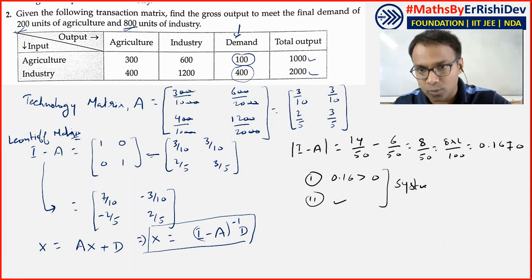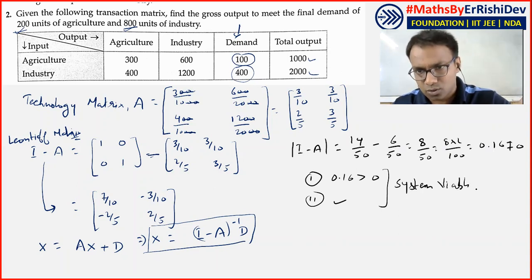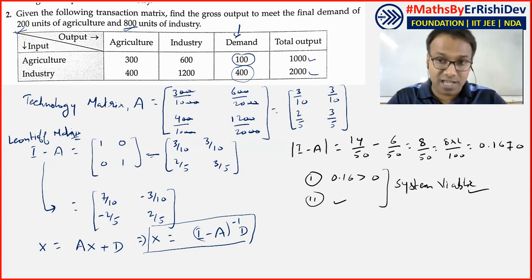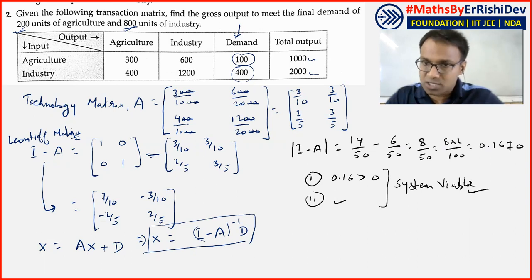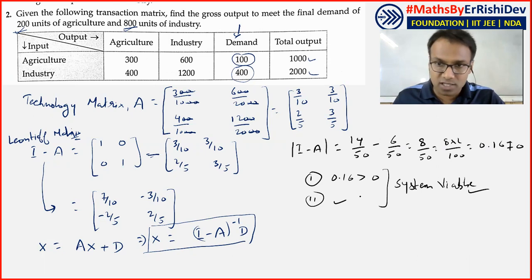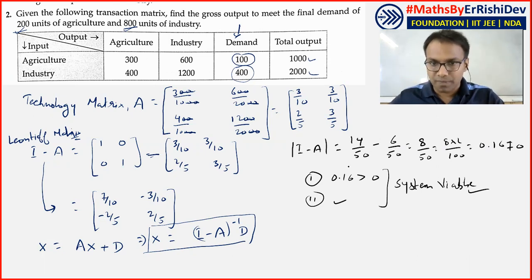So we say the system is viable. The interdependence of the two industries is viable — practically feasible. That is what we check with Hawkins-Simon's two conditions.